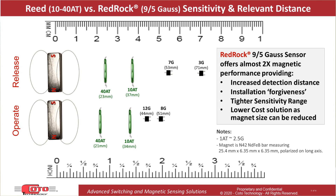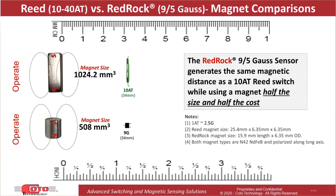Alternatively, if the increased distance is not needed, the customer now has the option of reducing the magnetic strength of the magnet. As shown on slide four, the higher magnetic power or higher sensitivity allows the customer to reduce the size of their magnet. In this very typical scenario, the magnet size can be reduced by almost 50%, which depending on how much they're paying for the magnet could translate into at least 50% savings.